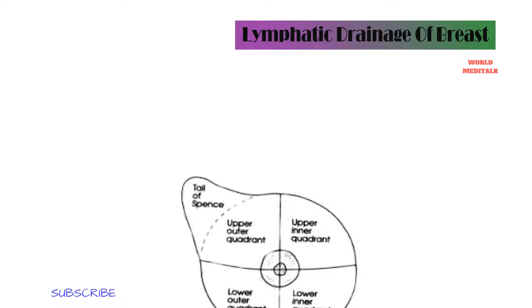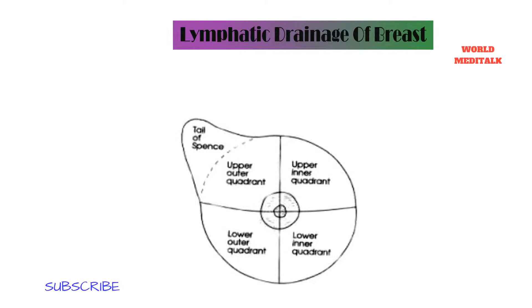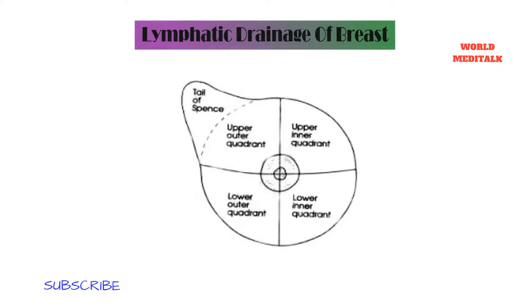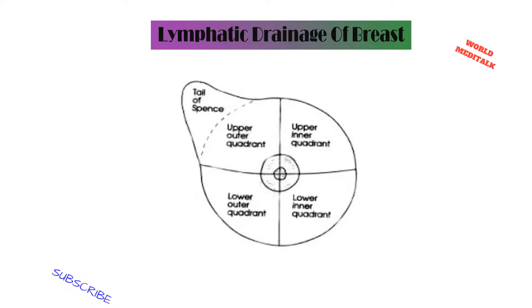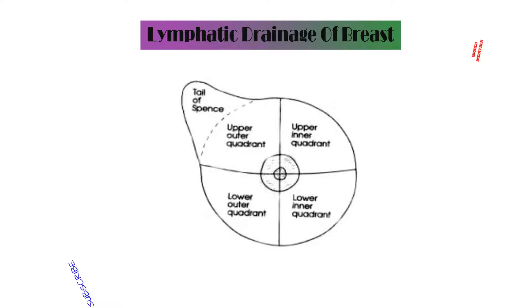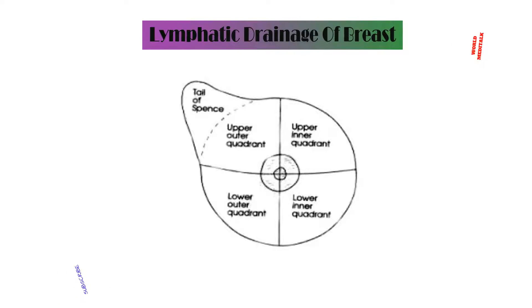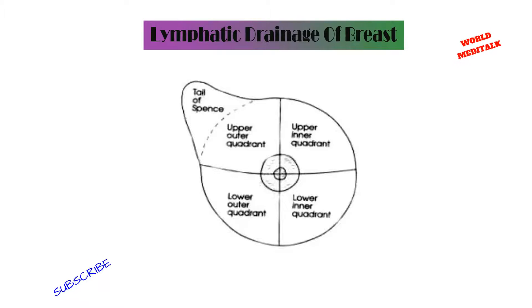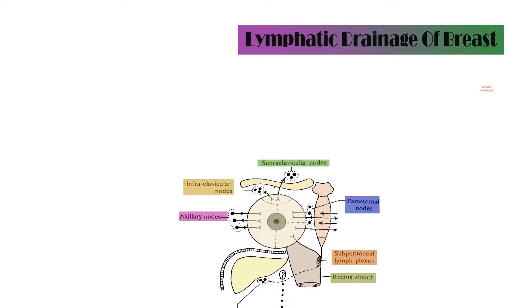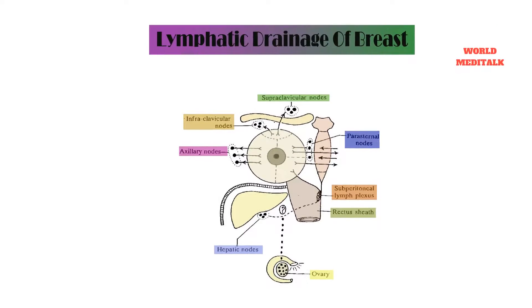To understand the lymphatic drainage system of the breast, we divide the breast into four quadrants: upper, lower, medial, and lateral. The lateral part mostly drains into the pectoral group of lymph nodes and finally into the apical group. The upper part of the breast drains directly into the apical group, also called the subclavicular group. The lower and inner quadrant mostly drains into the subperitoneal and subdiaphragmatic group of lymph nodes.